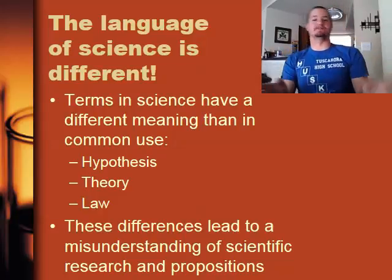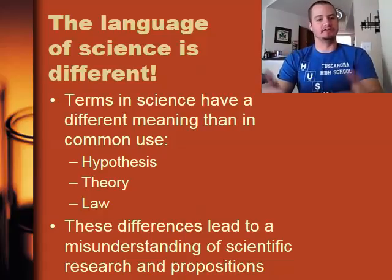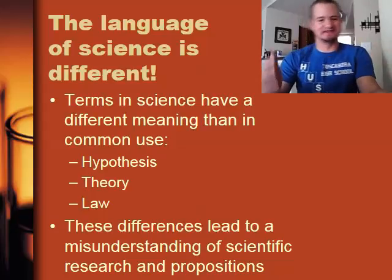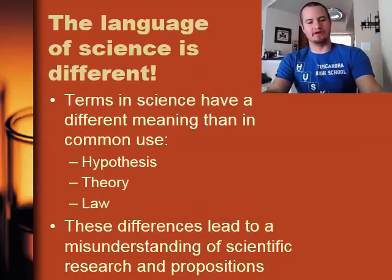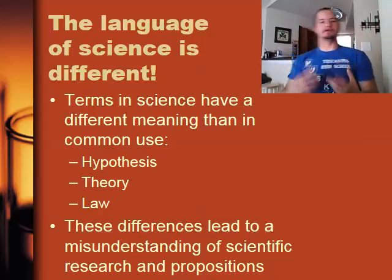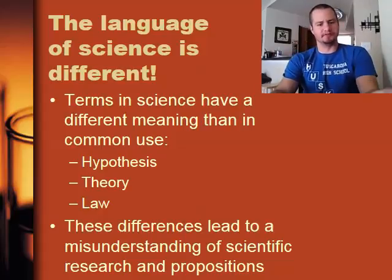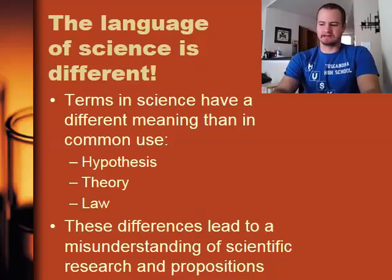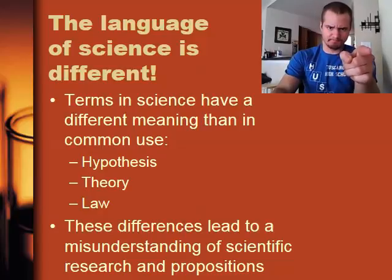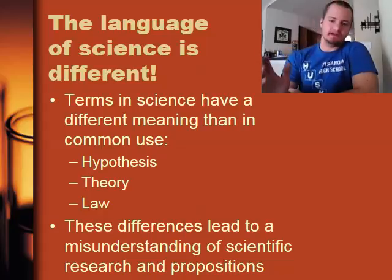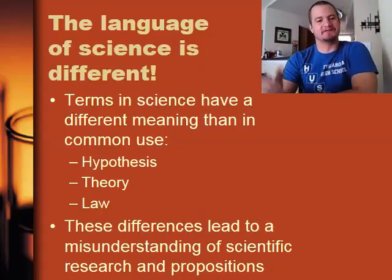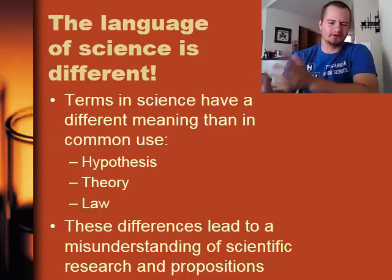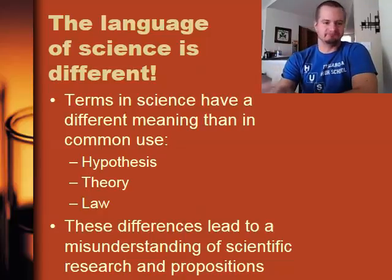So the language of science is different. Terms in science have a different meaning than they do in everyday common use. For example, you won't really throw around hypothesis and theory in everyday conversation. But a law, when you're talking about a law, normally a law is something like the speed limit put in place to keep things in check and keep you safe, like speeding. But in science, a law means things a little bit different than you would normally think. These differences can lead to a misunderstanding of scientific research and propositions if you don't know the correct terminology, which is our goal to convey to you today.